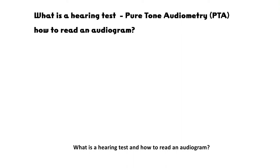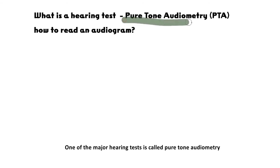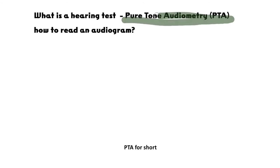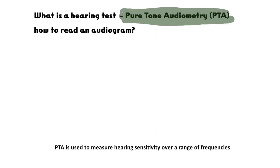What is a hearing test and how to read an audiogram? One of the major hearing tests is called pure-tone audiometry, PTA for short. PTA is used to measure hearing sensitivity over a range of frequencies, which is testing the softest sound people can hear across different ranges of pitches.